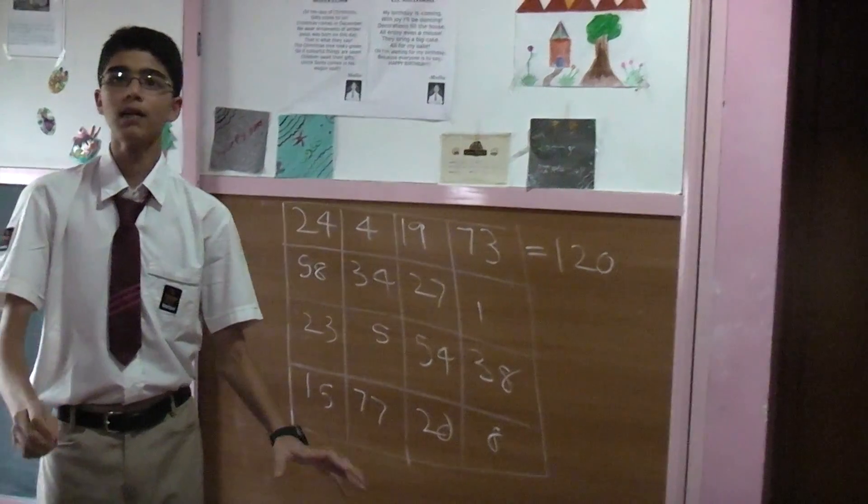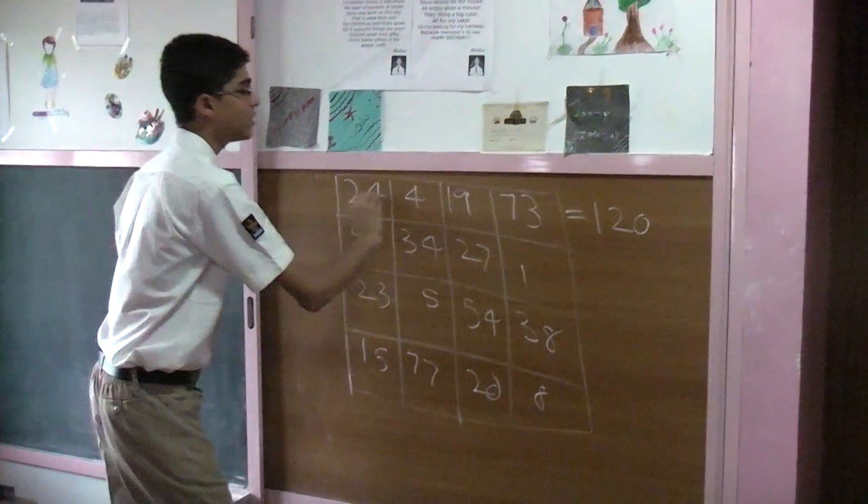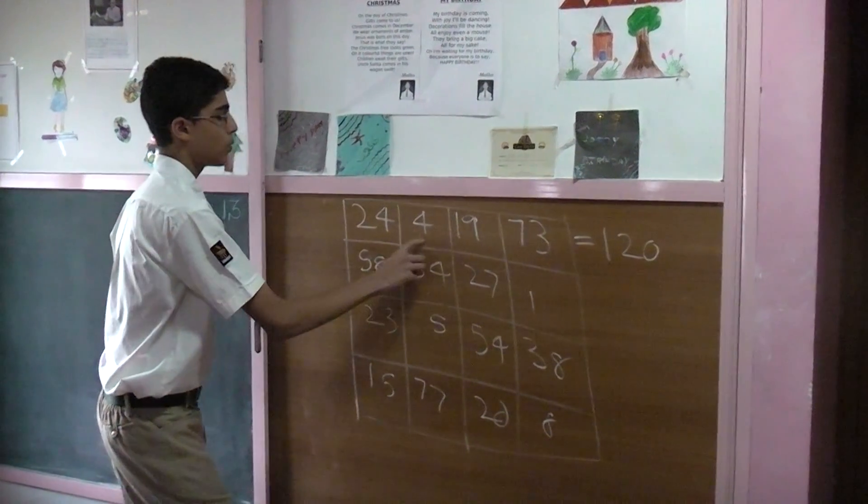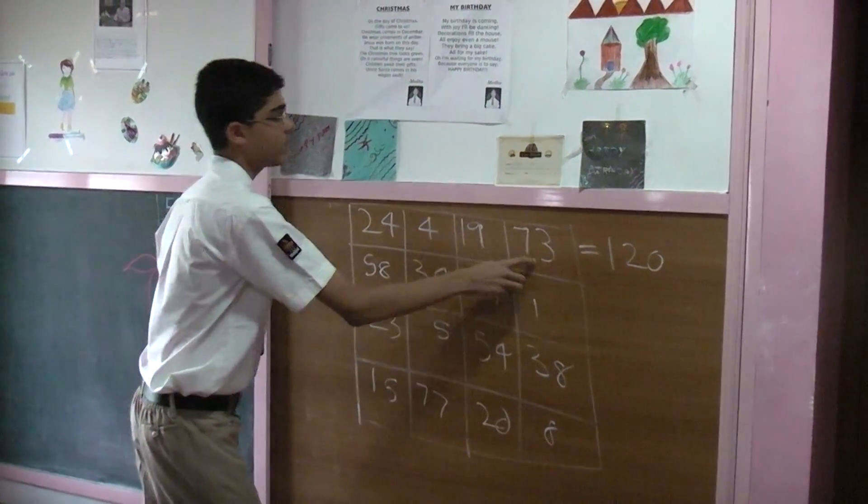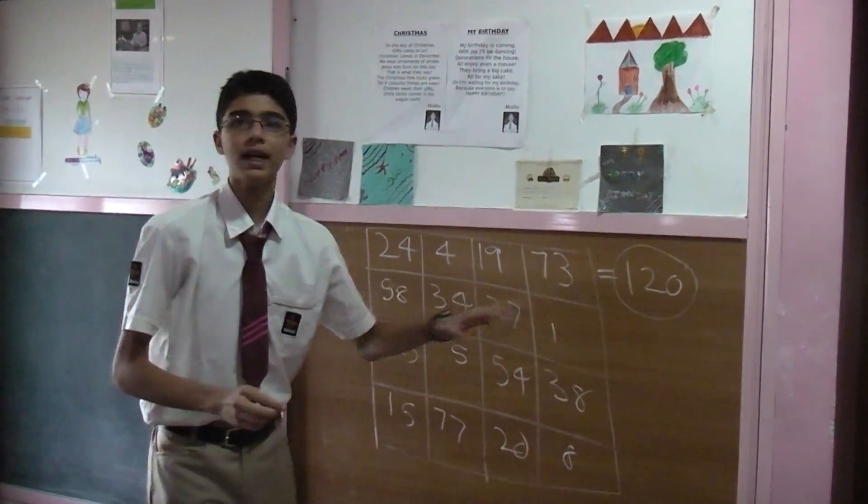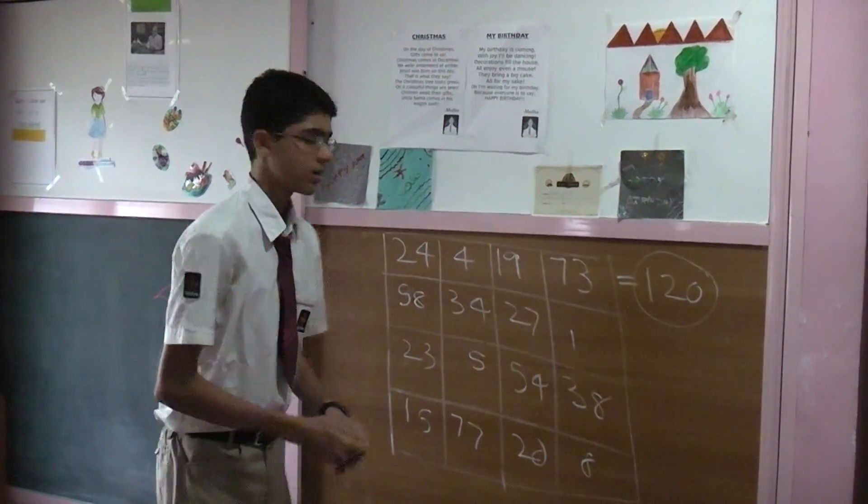Okay, what is great about this box? You add these numbers in the top row and we get 24 plus 4 is 28, 28 plus 19 is 47, 47 plus 73 is 120. So, 120 is the magic number of the great Tendulkar.